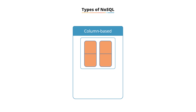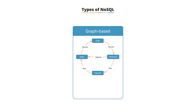Column-based databases: each storage block contains data from only one column. Examples are Bigtable, Cassandra, HBase, and Hypertable. Graph-based databases are network databases that use nodes to represent and store data. Examples are Neo4j, InfoGrid, Infinite Graph, and FlockDB.